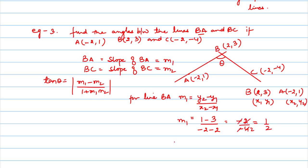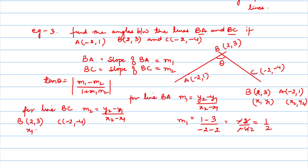Similarly, for line BC, we use the same formula Y2 minus Y1 upon X2 minus X1. B is (2, 3) and C is (minus 2, minus 4). Applying the formula: Y2 minus Y1 is minus 4 minus 3, and X2 minus X1 is minus 2 minus 2. We get minus 7 upon minus 4. Minus and minus cancel, so we get 7 by 4. Therefore M2 equals 7 by 4.